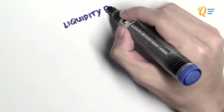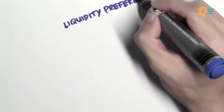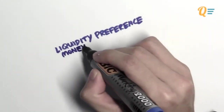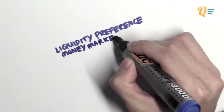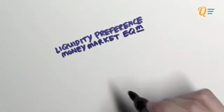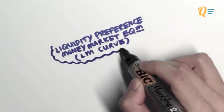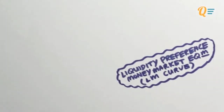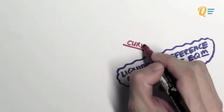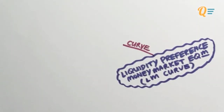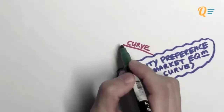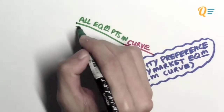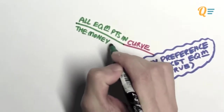Hi everyone. In this video we are going to be talking about the liquidity preference and money market equilibrium, which is also known as your LM curve. The LM curve is simply a curve which shows all the equilibrium points in the money market.